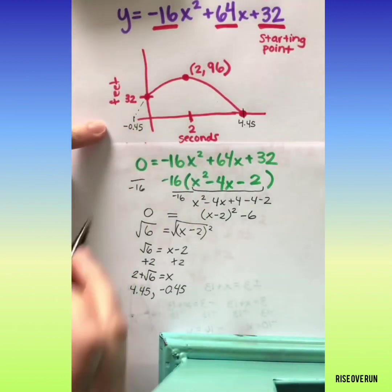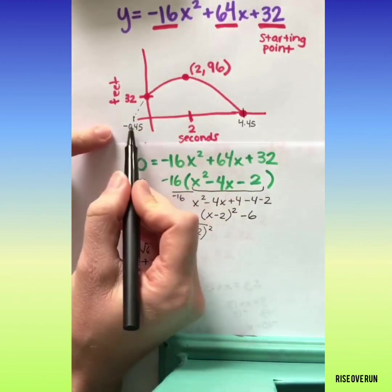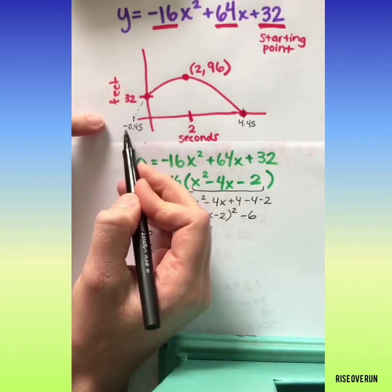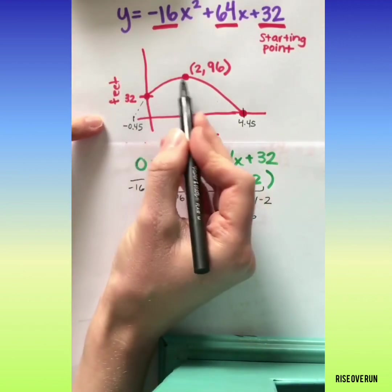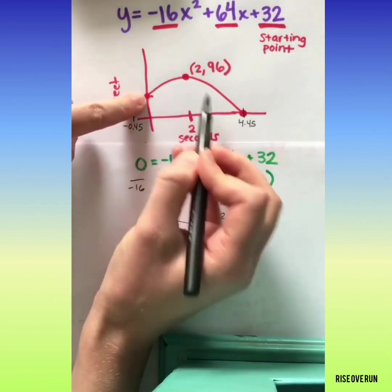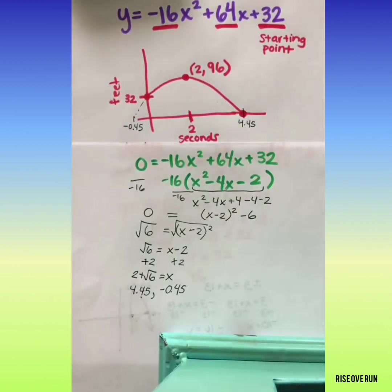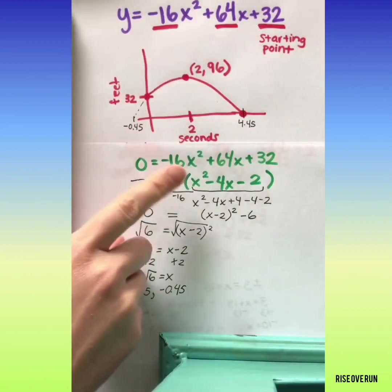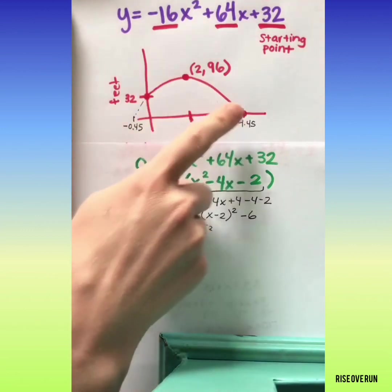Negative 0.45 would be back here. So in this real-world situation, we don't really need the negative. That would be like going back in time. Yes, it's part of the parabola, but it's not part of the real-life story.